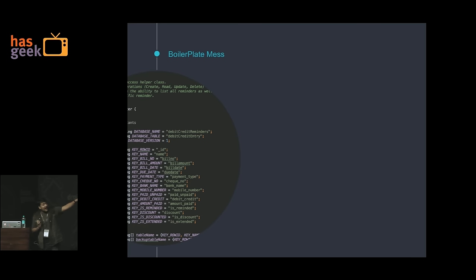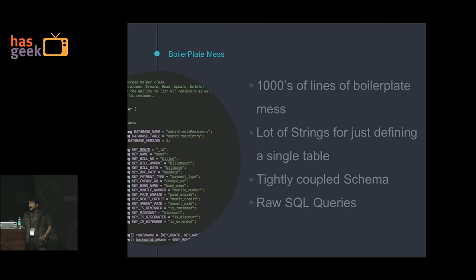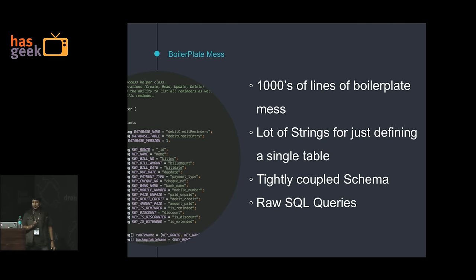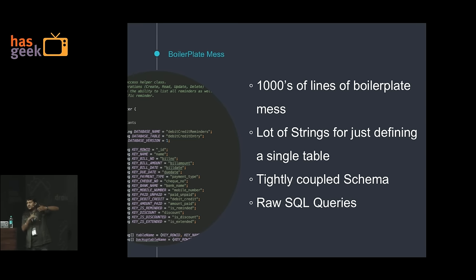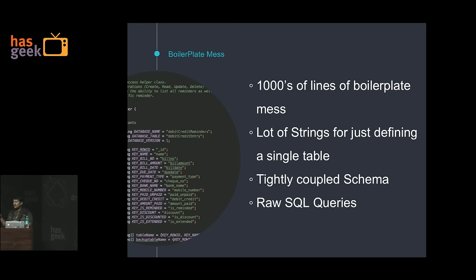How do you implement this in SQLite? This is actual SQLite code — there is literally a thousand lines of just boilerplate code to initialize SQLite and everything in your database. There are lots of strings just for a single table. For each row, each column, you are defining a string. So if you have more than 10 tables, your file will grow to over a thousand lines just for defining the table strings.